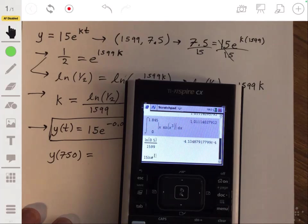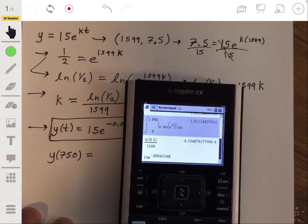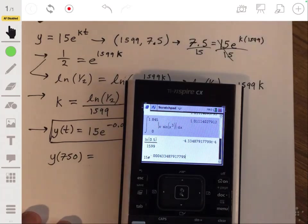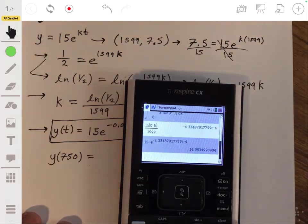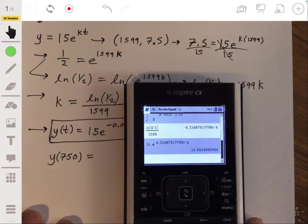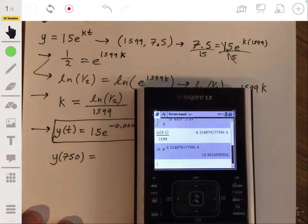15e, that's not e. 15e, there you go. Negative times, 15e to negative 0.0004334878. All right, so I think that's entered correctly. And we get about 14.94.